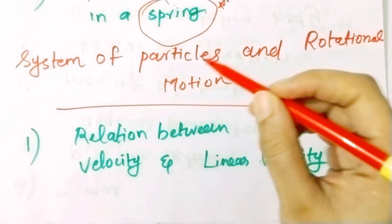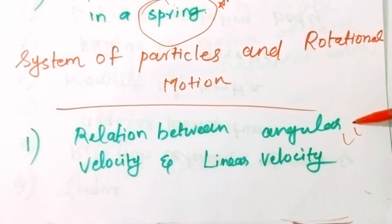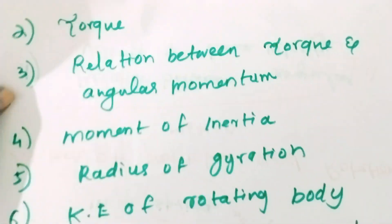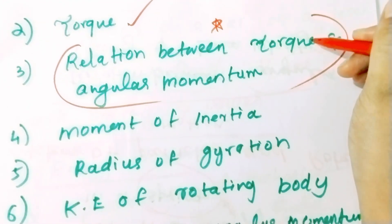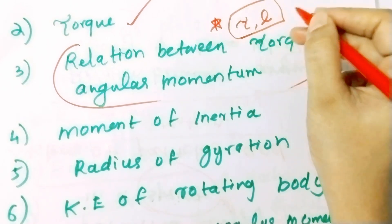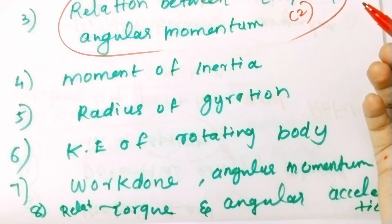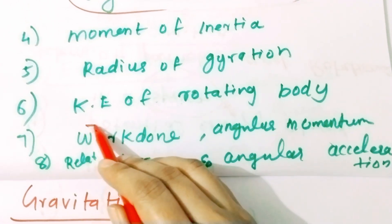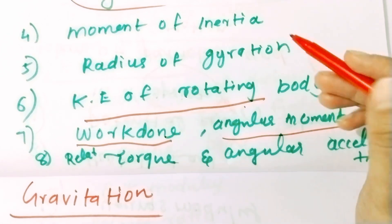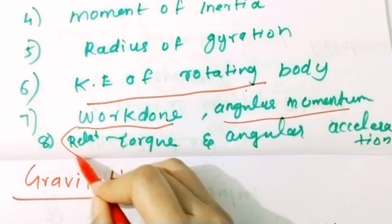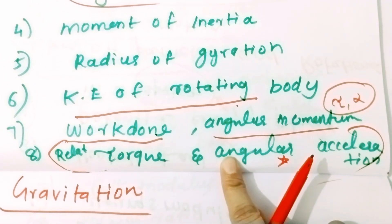Next: system of particles and rotational motion. The relation between angular velocity and linear velocity is a one-mark topic. What is torque? The definition of torque and its equation — this is a derivation. The relation between torque and angular momentum — give it a star. The kinetic energy of a rotating body — this is a derivative entity. The relation between torque and angular acceleration — this is a two-mark derivation.